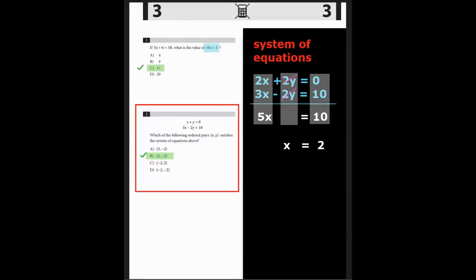2x plus 3x is 5x, 2y plus negative 2y is 0, and 0 plus 10 is 10. Dividing by 5 on both sides, x equals 2. And B must be the correct answer, because it's the only choice where the coordinate pair x, y has an x value of 2. The correct answer was B, 2 comma negative 2.